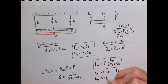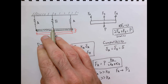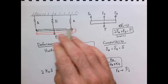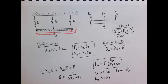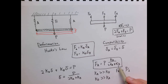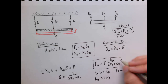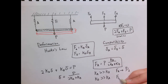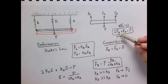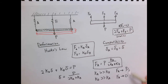The other limit is when k_B >> k_A — spring B takes all the load and the A springs are like flimsy rubber bands. In that limit, F_A ought to go to zero, and we see that it does: k_A is small, so we get a small number over a large number, driving F_A toward zero. So statics alone tells us F_A must be between 0 and P/2, but the actual value depends on the relative stiffness of the two springs.